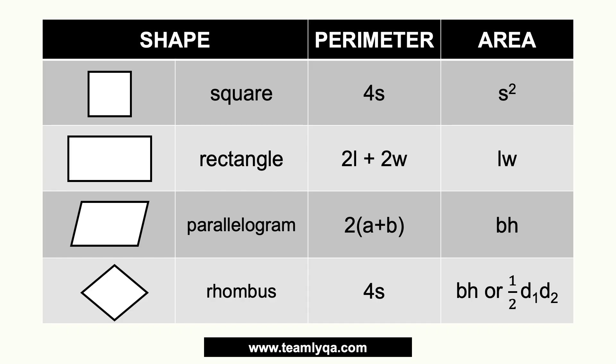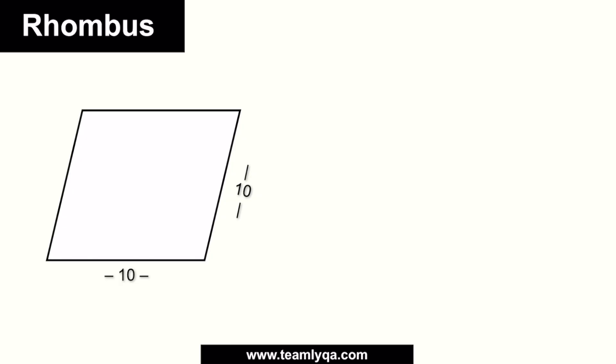Now, your area is either base times height or one-half times the first diagonal times the second diagonal. We'll talk about diagonals later. But let's look at this sample. If you have a rhombus with sides of 10 and you need to find the perimeter, all we have to do is multiply the side by 4. Because again, if this is 10, this is 10, this is 10, and this is 10. So, if we substitute, that would equal 4 times 10 or 40 units.